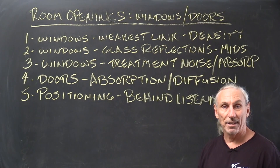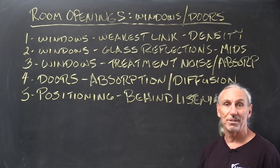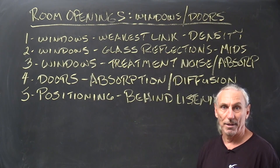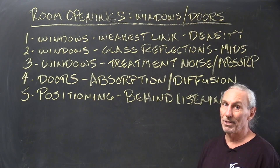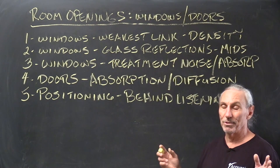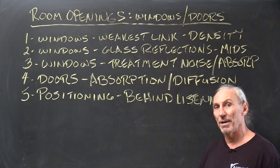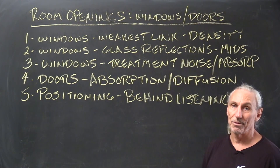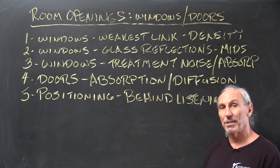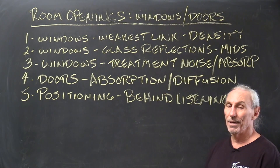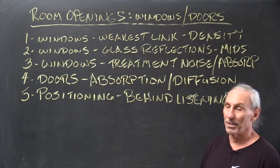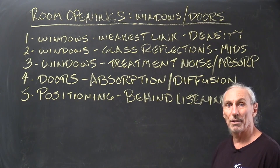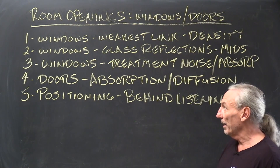Most walls I see today don't have enough density to stop a bike with a ringer on its handlebars. If there's a 2x4 wood framed wall with drywall on each side and a window, you've got two issues. You've got low density for the window and low density for the wall, so you've got the whole structure leaking — and acoustically the room sinks like a ship.